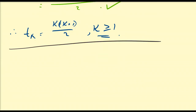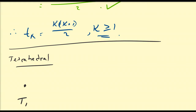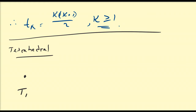Now we move on to the tetrahedral numbers. We'll begin by defining the first tetrahedral number, denoted capital T. Tetrahedra are three-dimensional shapes. Our second tetrahedral number T2 is formed by a tetrahedron with vertices, giving us T2 equal to 4.